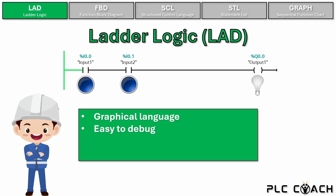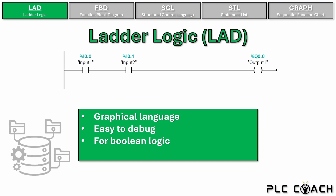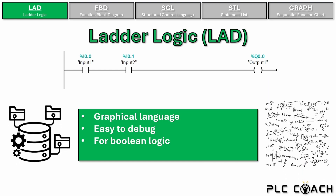When we connect the controller online, we can monitor the program in real time. We can see that voltage is present at the first push button. When we press the button, the current is allowed to flow to the next button. What needs to happen for the lamp at the output to light up? Exactly — the second push button also needs to be pressed. Ladder logic is easy to read and understand, which is one of the reasons it's such a popular programming language. Ladder is perfect for handling Boolean logic. In general, ladder logic is used for simpler tasks, which will make up the majority of your project. For more complex applications such as data management or advanced calculations, other programming languages might be better.